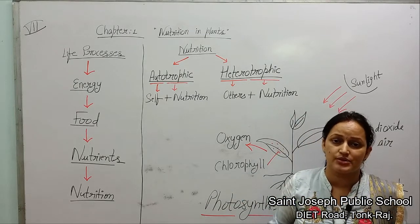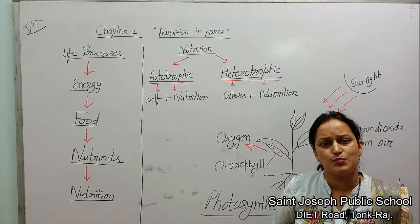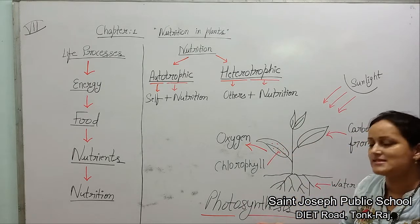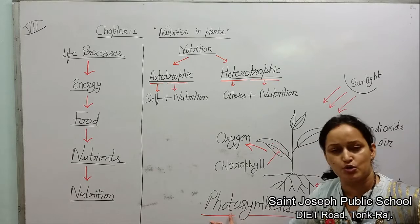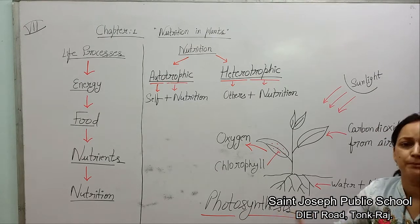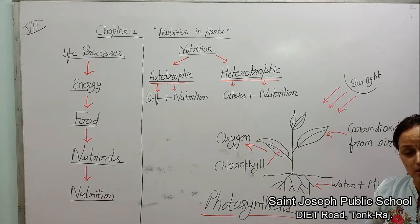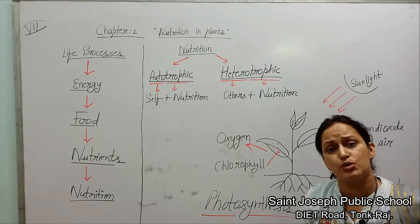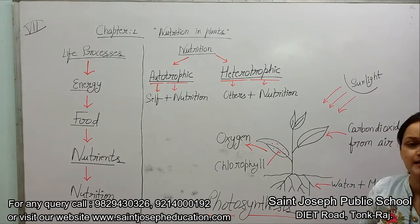A big question arises here: what is the process involved for autotrophs to make their own food? That process is called photosynthesis. Let's break this word into parts. The first part is 'photo', which means light, and the second part is 'synthesis', which means to prepare or to make. So photosynthesis is the process by which all plants synthesize their own food in the presence of light.